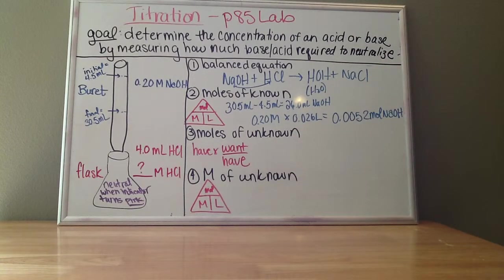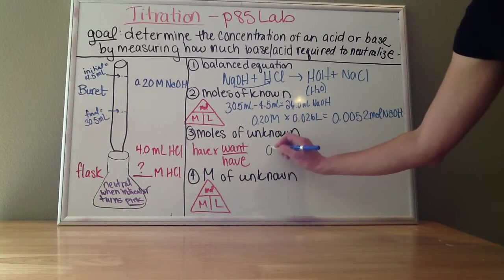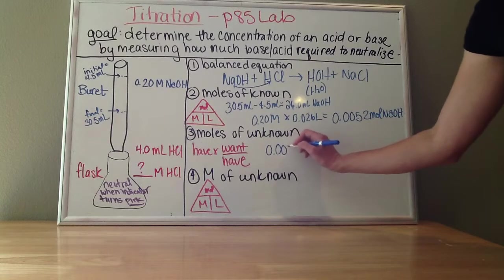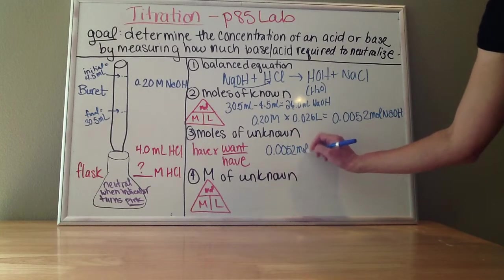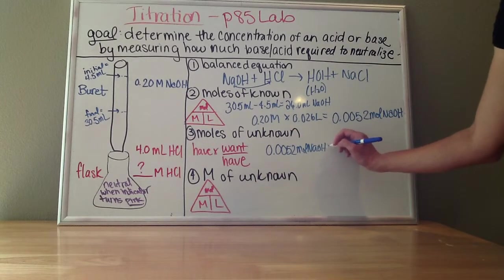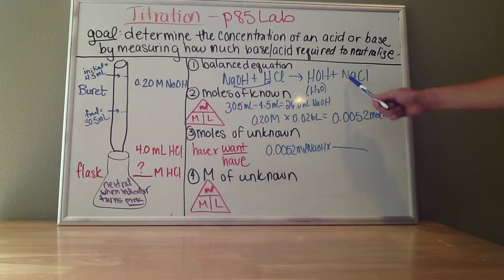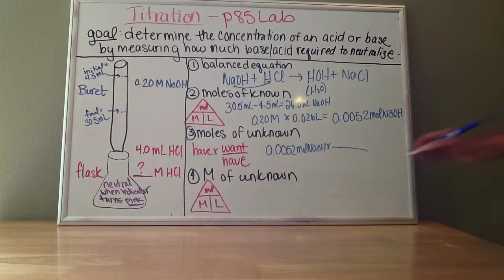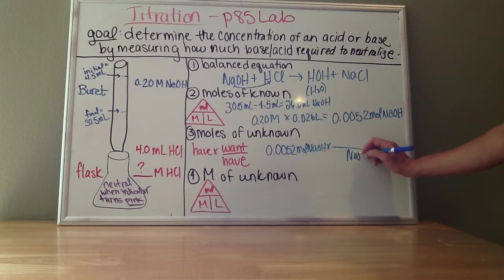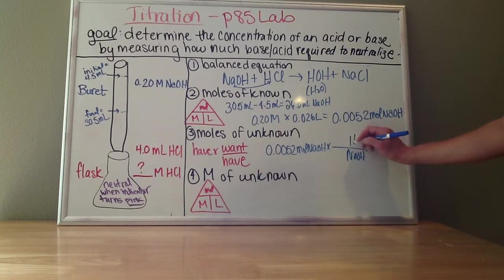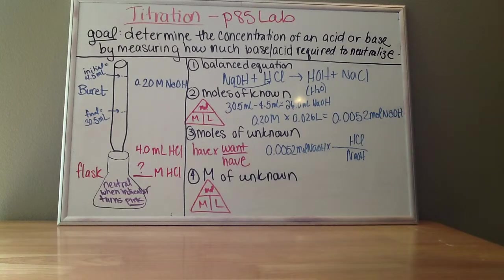My next step is to figure out moles of unknown. Remember, in this case, HCl is my unknown. And what I know is I have 0.0052 moles of NaOH. And I'm going to use a ratio that I get from the chemical equation that tells me how much NaOH is needed for every HCl. So this chemical equation, they're all one-to-one-to-one ratios.